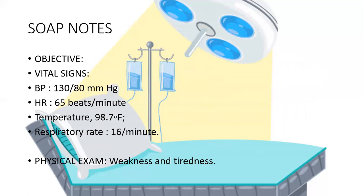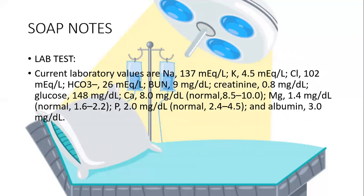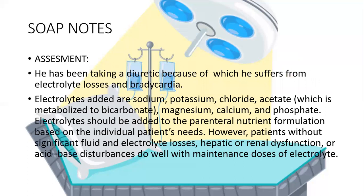Objectively, vital signs: blood pressure is 130/80 mmHg, heart rate is 65 beats per minute, temperature is 98.7°F, respiratory rate is 16 per minute, and physical exam shows tiredness and weakness. His lab tests show values for sodium, potassium, calcium, magnesium, creatinine, albumin, and more. Assessment: he has been taking a diuretic, which caused electrolyte loss and bradycardia — slowing of the heart rate.